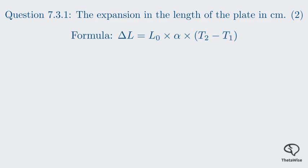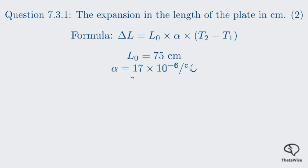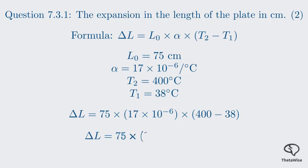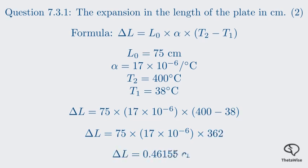Now let's identify the values we need: L₀ = 75 cm, alpha = 17 × 10⁻⁶ per °C, T₂ = 400°C, and T₁ = 38°C. Substituting into the formula: delta L = 75 × 17 × 10⁻⁶ × (400 − 38). First, the change in temperature: 400 − 38 = 362. So we have 75 × 17 × 10⁻⁶ × 362, which gives 0.46155.